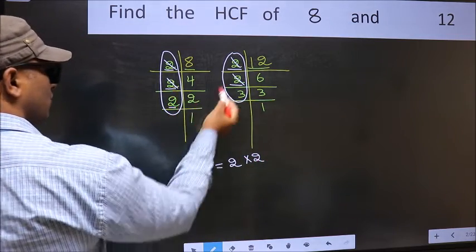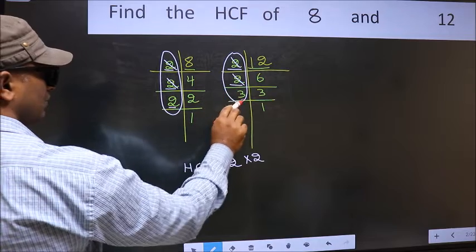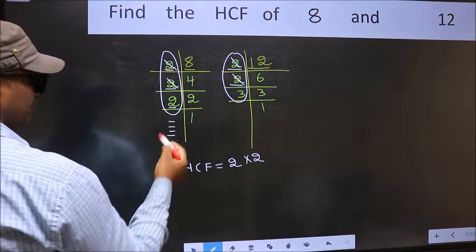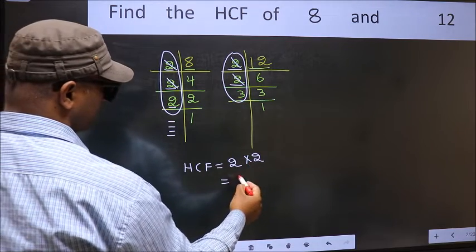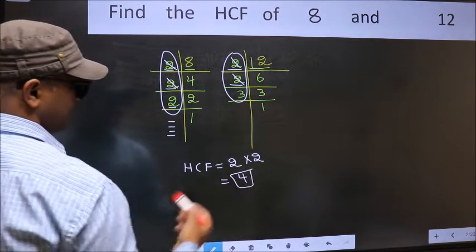Next number 2. Do we have 2 here? No. So no more numbers have been left out. So our HCF is 2 times 2, 4 is our HCF.